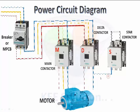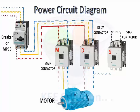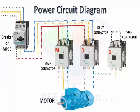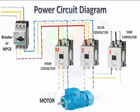Here it is important: in the star contactor, the first phase should be blue in place of red, and it should be connected to the blue terminal. Yellow should be connected to yellow, and red should be connected to red.